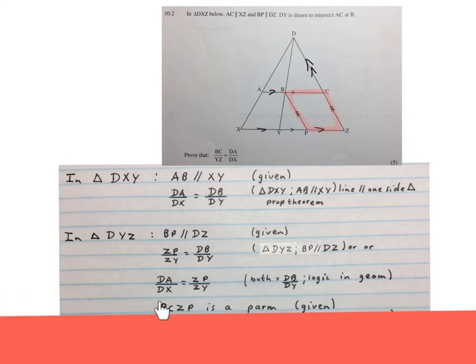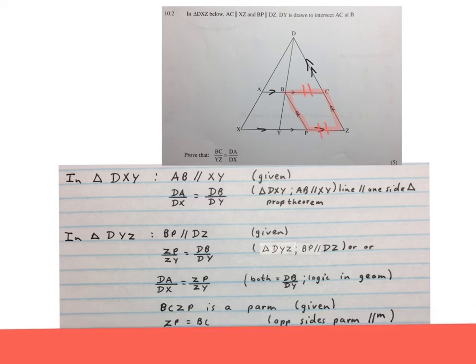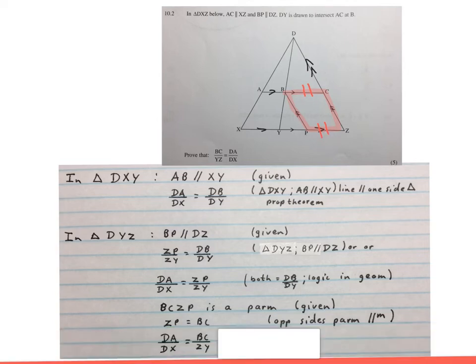Next we can write BCZP is a parallelogram. It was given, the red quadrilateral there is a parallelogram. Then you can write ZP is equal to BC because they're the opposite sides of a parallelogram. Those two sides are equal.